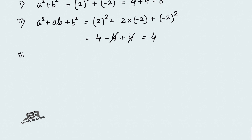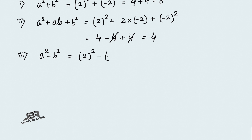Number 3: a² minus b². So 2² minus (minus 2)². That is 4 minus 4, which equals 0.